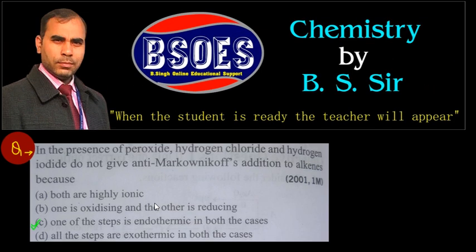Sometimes if the option about energy is not given and instead the option 'the homolytic cleavage of HCl and HI is not favorable' is given, then that would also be the correct answer to tick. Is that clear?